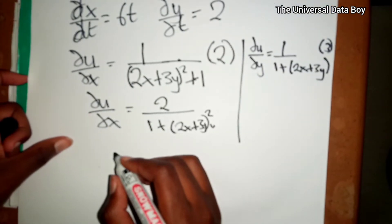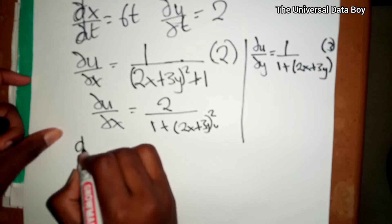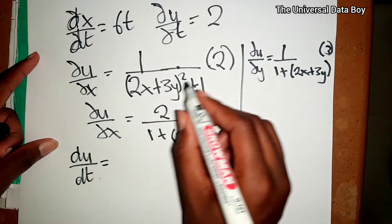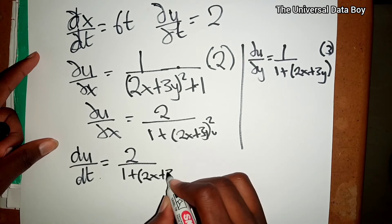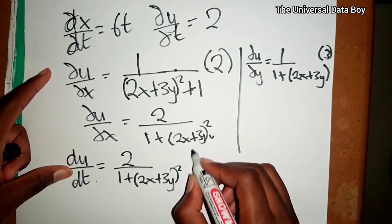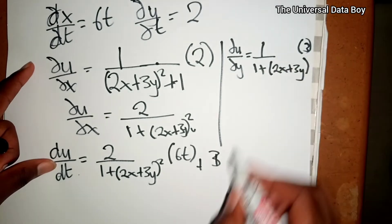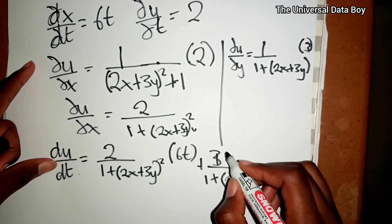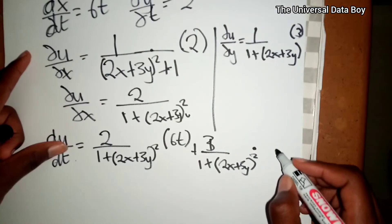Now we have dx/dt, dy/dt, ∂u/∂x, and ∂u/∂y. So du/dt equals ∂u/∂x times dx/dt, which is 2 over 1 plus (2x + 3y) squared, times 6t, plus ∂u/∂y, which is 3 over 1 plus (2x + 3y) squared, times dy/dt, which is 2.